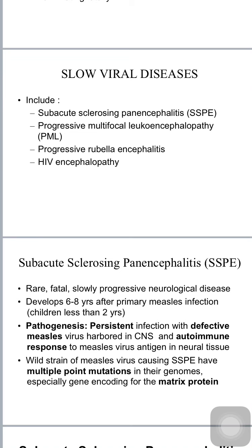Subacute sclerosing panencephalitis develops six to eight years after primary measles infection — for example, if a child is infected at less than two years of age, the complication appears about eight years later. The pathogenesis involves persistent infection with a defective measles virus harbored in the CNS, with multiple point mutations in the wild strain particularly involving the matrix protein genes. This disrupts assembly and budding, so the virus remains harbored within neurons, and there is also an autoimmune response to measles virus antigen in neural tissue.